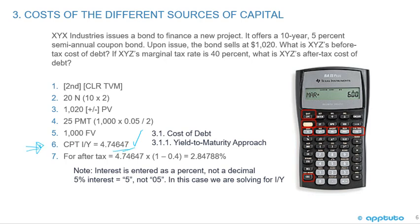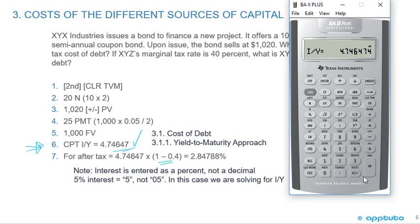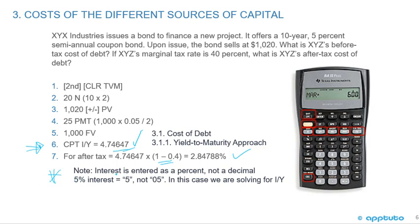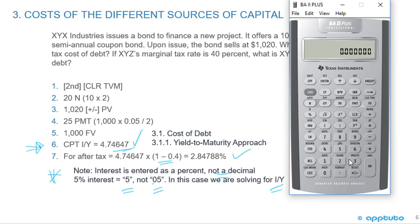Hit compute I/Y and we get 4.746474. So the before-tax cost of debt is approximately 4.7465%. For the after-tax cost of debt, multiply by 1 minus the tax rate. Since the tax rate is 40%, multiply by 0.6: 4.74647 times 0.6 gives 2.847884%, which is the after-tax cost of debt. Note that interest is entered as a percent, not as a decimal — 5% is entered as 5, not 0.05. We do this a lot in fixed income, so by the end of studying you should be very good at calculating yield to maturity.